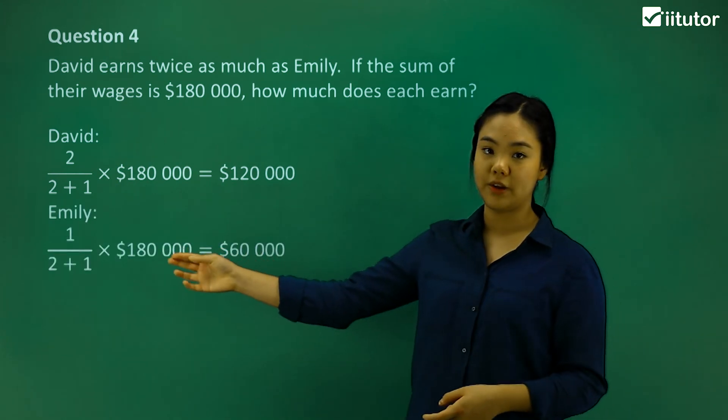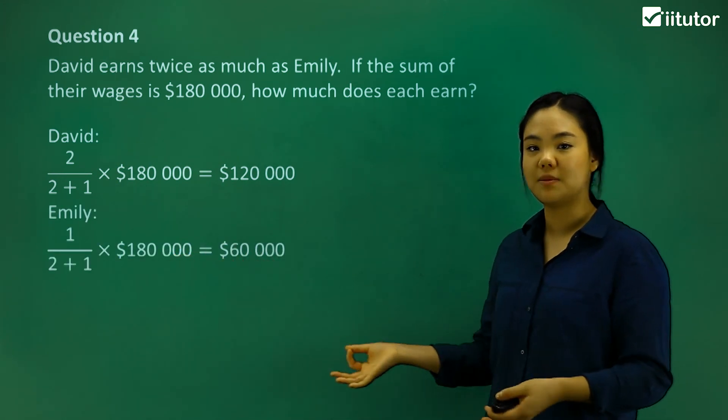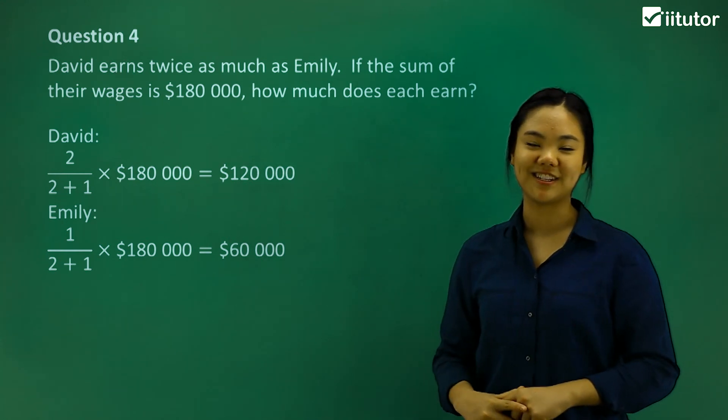So for Emily, we can say 1 over 2 plus 1, all right? And then we times that by 180,000, and the answer is 60,000.